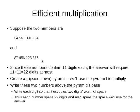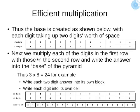Now, we multiply these by first creating a pyramid. And on top of the base, we write out these two numbers, but we write them out in a manner that each of their digits occupy two digits' width of space. So we write it out like this.